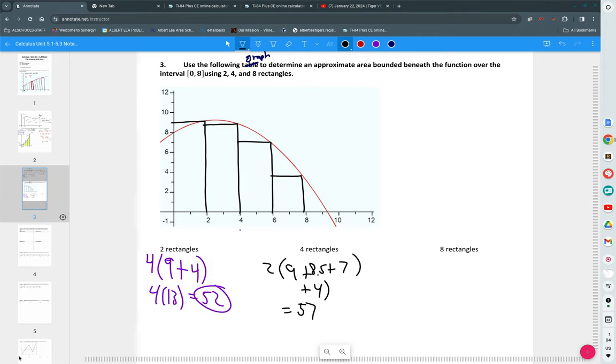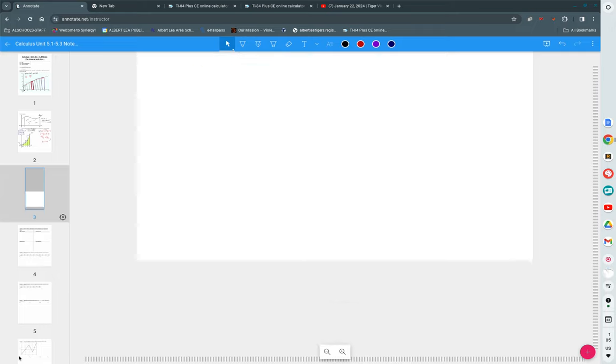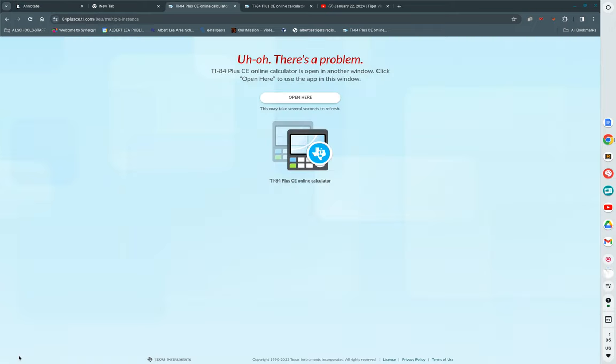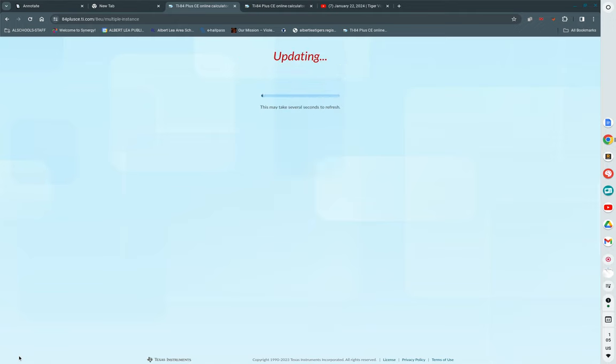All right. Go ahead. Take out your assignment. So for the first two, notice that you're given a function. The first one is negative x squared plus 4x plus 7. And then you're given graphs and you're given tables. And you're going to have some time to work on this. But just to kind of help you get started right away. Negative x squared plus 4x plus 7. If you need to go to your calculator to turn it on, you sure can. Or if you need to go to your calculator and figure out what the graph looks like, that's just fine.